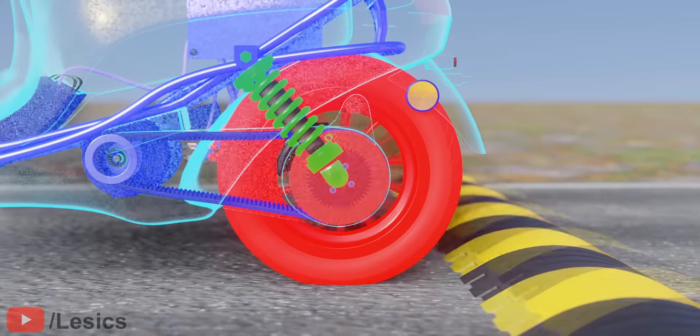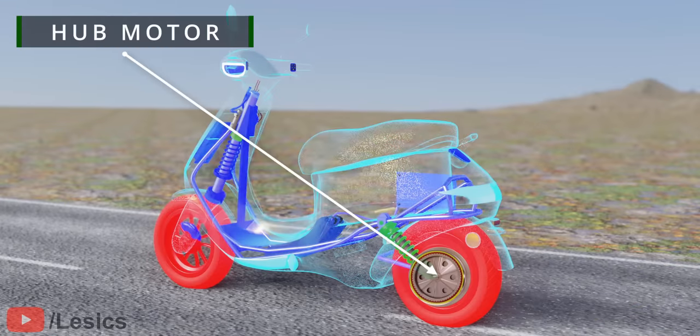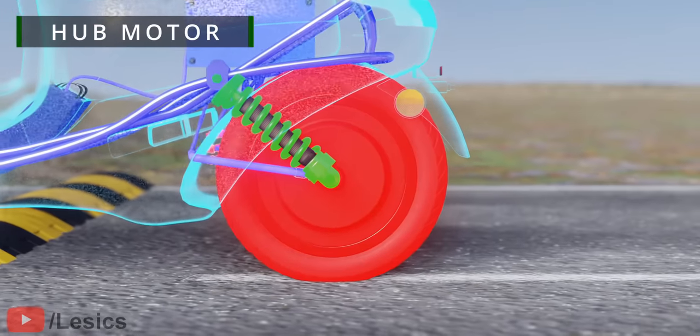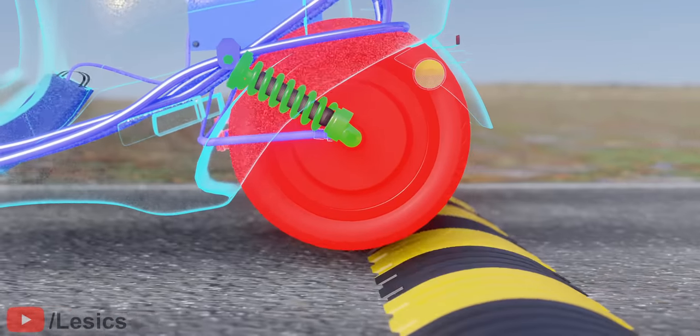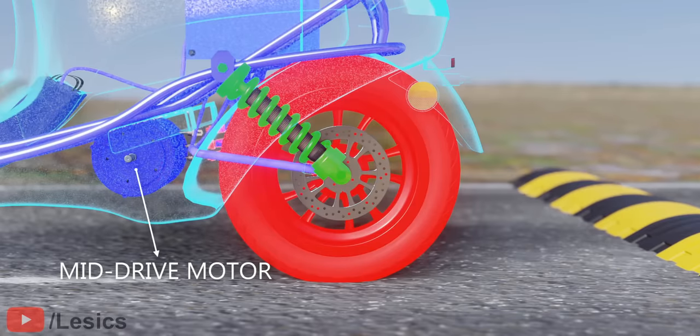Here you can see the motor is a part of the sprung weight. Suppose Ola used a hub motor, which has an in-wheel placement. In that case, the unsprung weight increases and the ratio will decrease, leading to discomfort while you drive. For this reason, the Ola electric scooter uses a mid-drive motor rather than a hub motor.